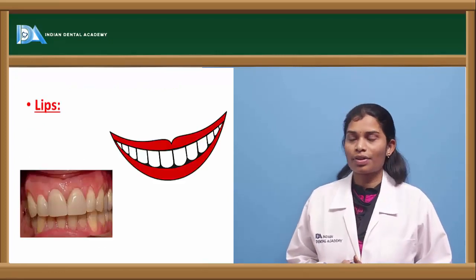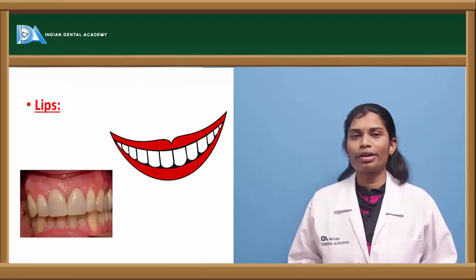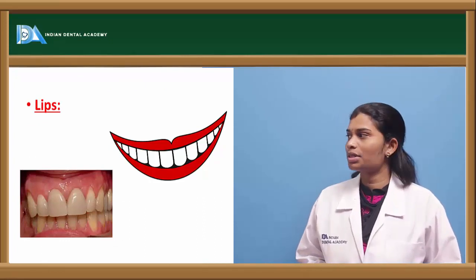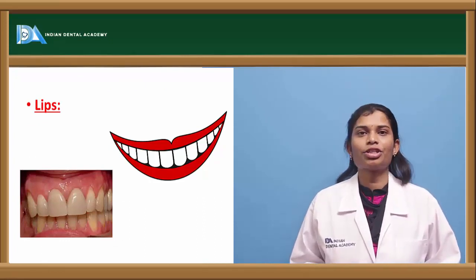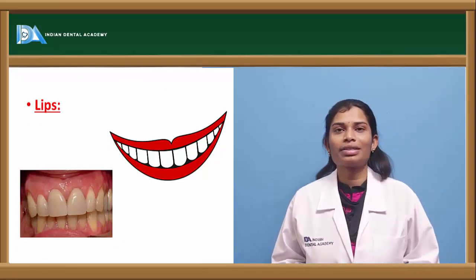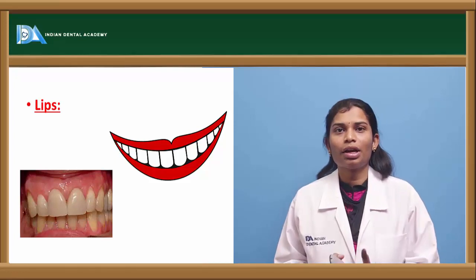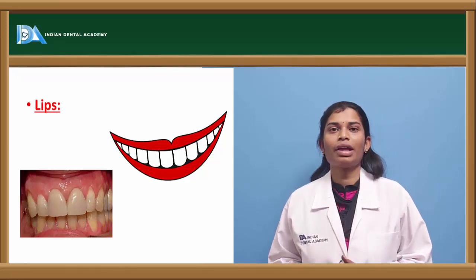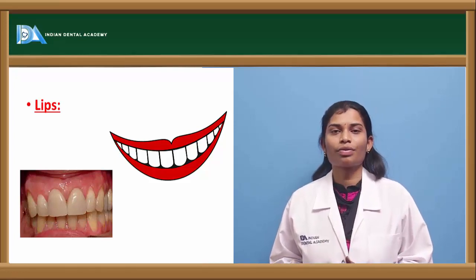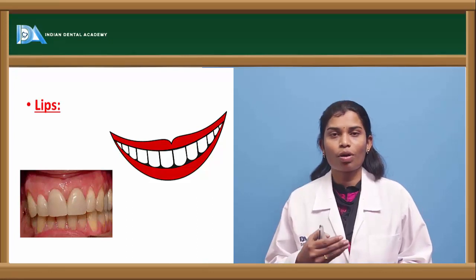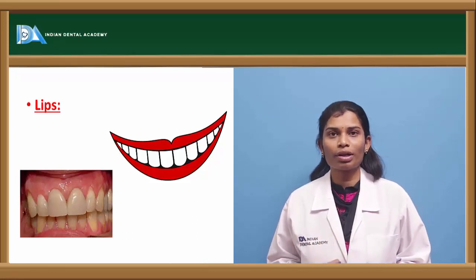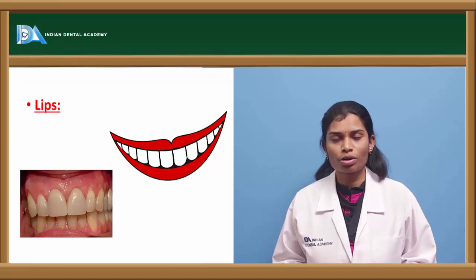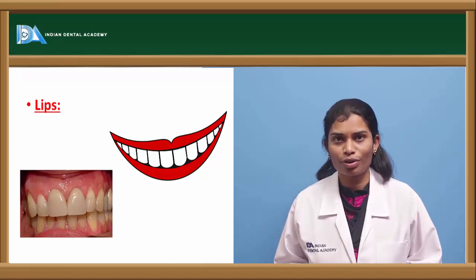The second component in extra-oral examination is lip examination. You have to examine the lips during rest and in the smiling position. This helps assess the visibility of the restoration, and will also aid in selection of the restoration material and placement of the margin.